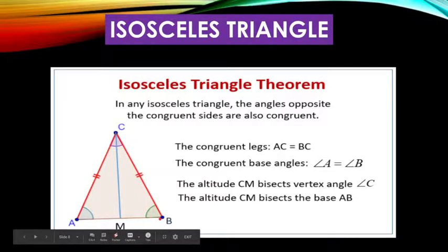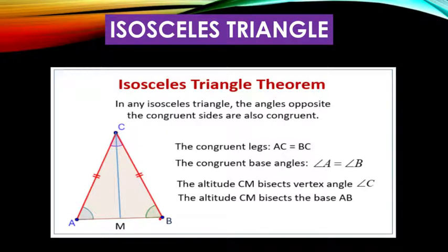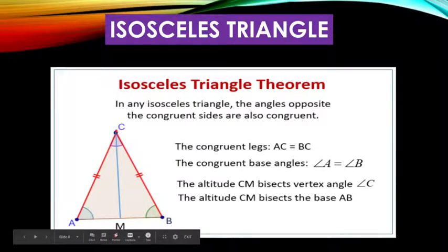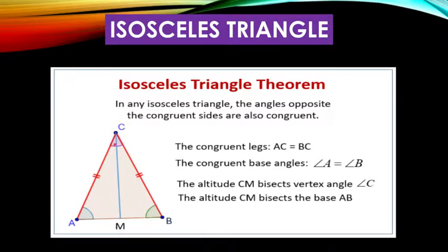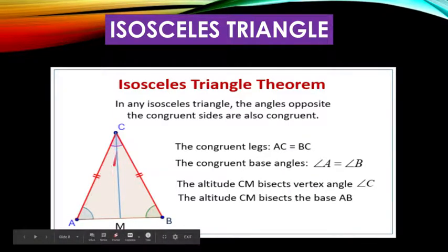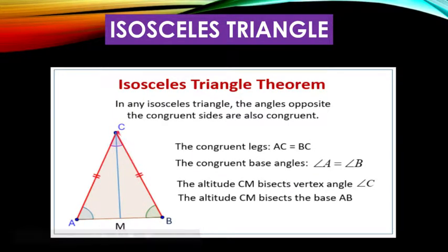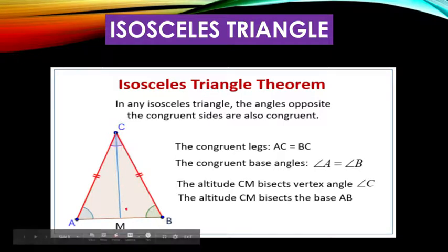The base angles are angle A and angle B. Meaning to say, they're congruent, they have the same measure. Next, the altitude CM bisects vertex angle C. This means we also have congruent angles which is angle ACM and angle BCM. The altitude CM bisects base AB.